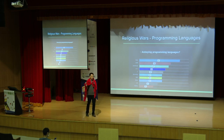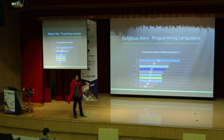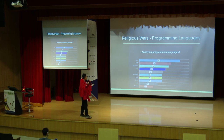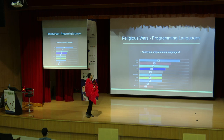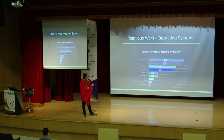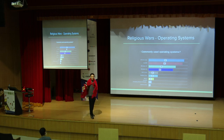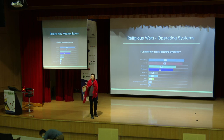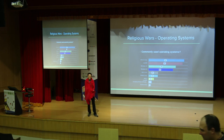We have some religious wars in the survey — like programming languages. A lot of people are annoyed by Java, and the second most unpopular is PHP. For operating systems, a lot of people use Ubuntu, followed by macOS, then Windows 10 and Windows 11. It's an open source conference, so fill the form!